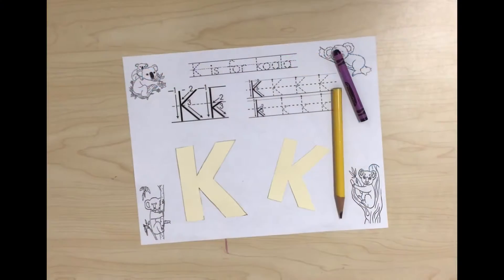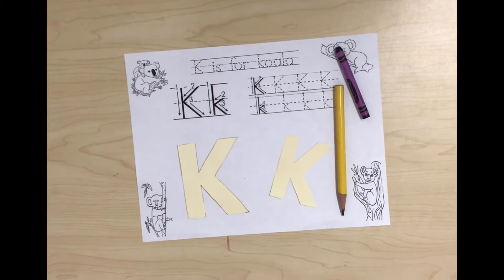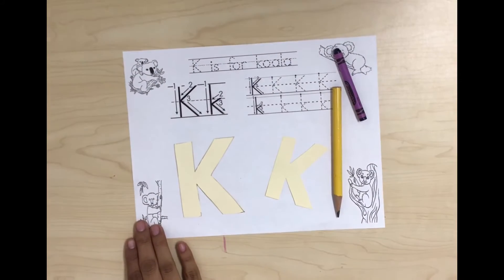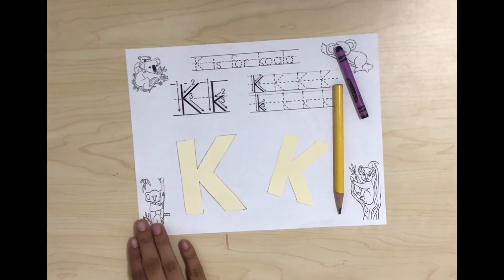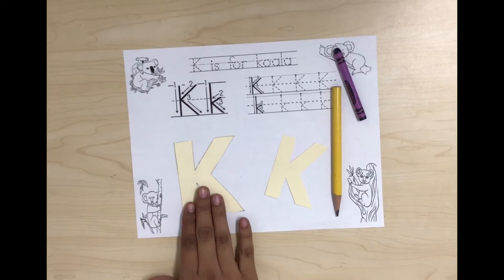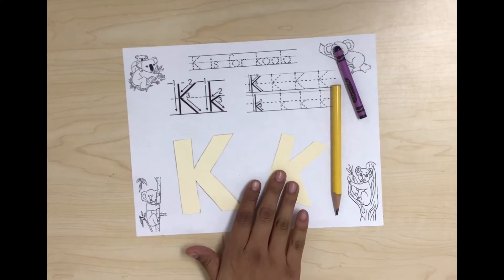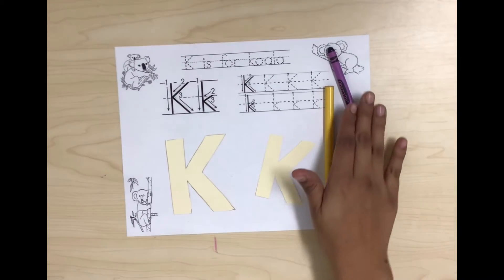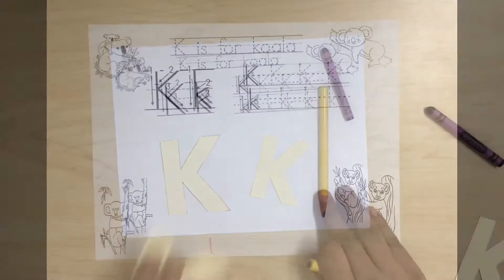Good morning, my name is Ms. Mariana and the small group activity for today is called letter K. The materials that we're going to be using for this activity are a word sheet with letter K, upper and lowercase letter K stencil, a pencil and a crayon.